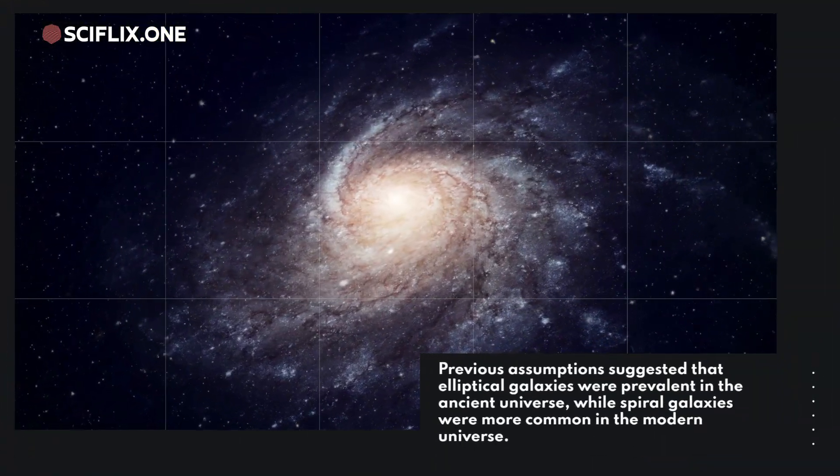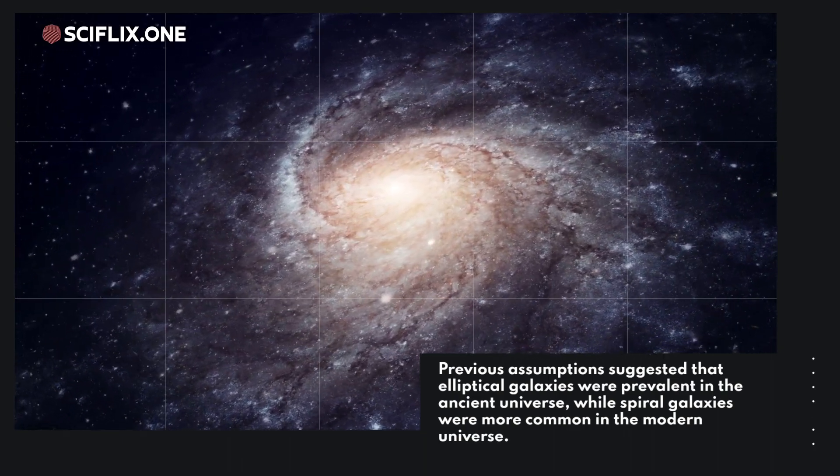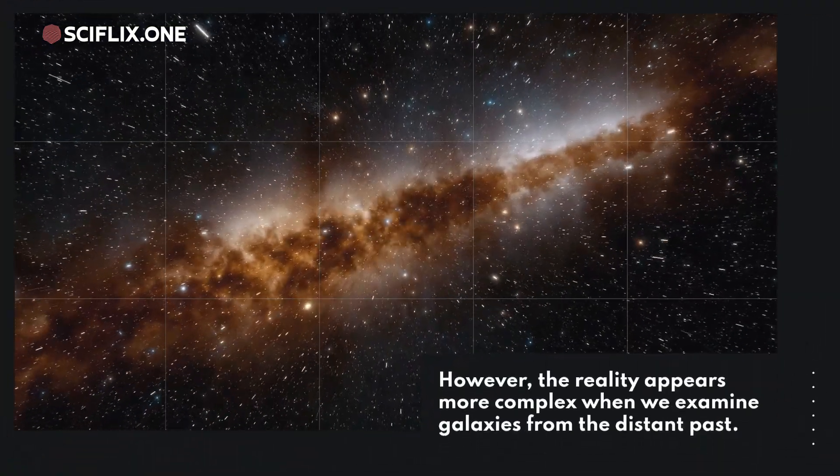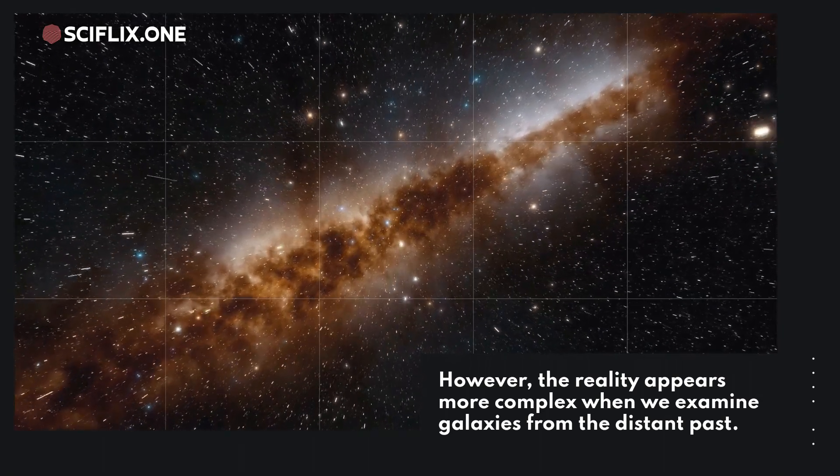Previous assumptions suggested that elliptical galaxies were prevalent in the ancient universe, while spiral galaxies were more common in the modern universe. However, the reality appears more complex when we examine galaxies from the distant past.